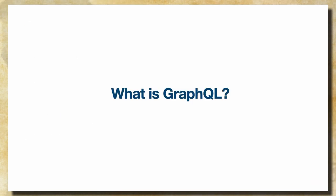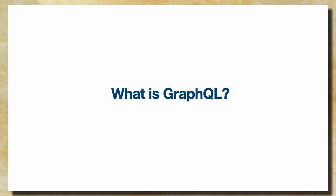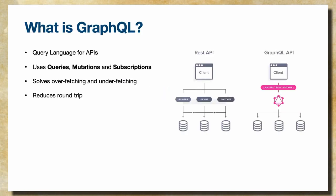GraphQL is a technology by Facebook released a few years ago. It's a query language for APIs — you can think of it as an alternative to REST API, except it works a little differently. It uses three main operations called queries, mutations, and subscriptions.